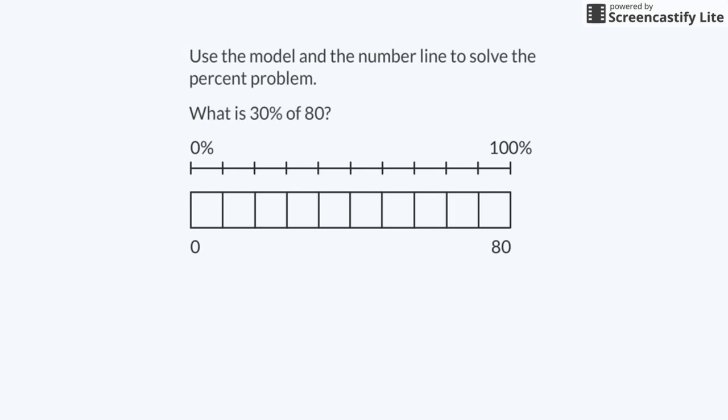Each section is 8 parts. Since 10 times 8 is 80, or 80 divided by 10 is 8, each section represents 8 parts of the whole. Next, I will place a label at 30% on the number line and shade 3 sections of the model to represent 30% of 80.